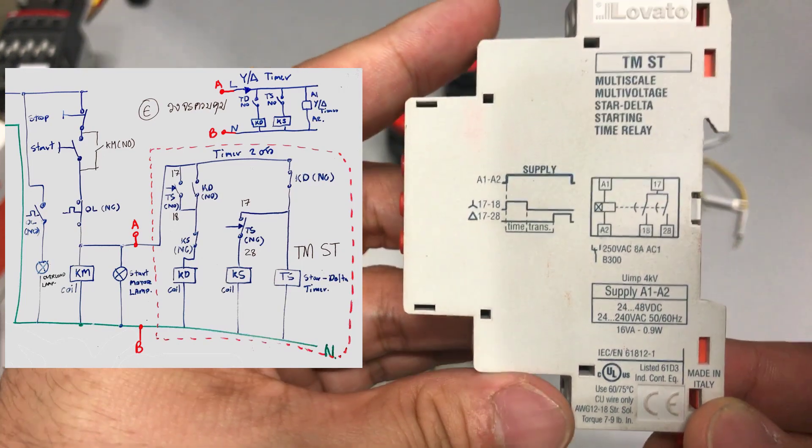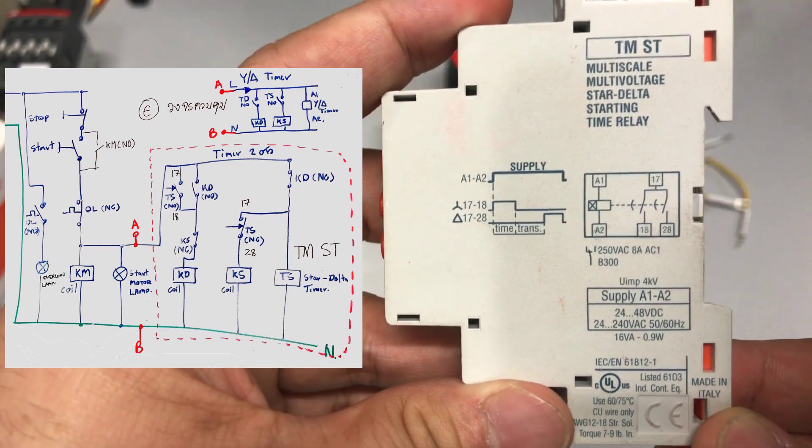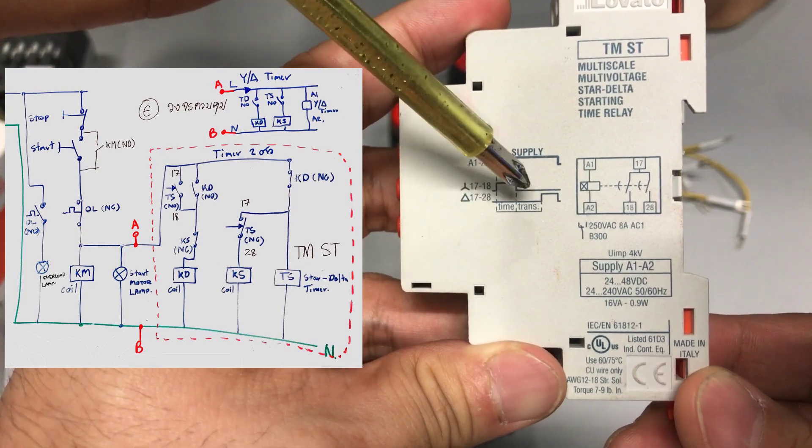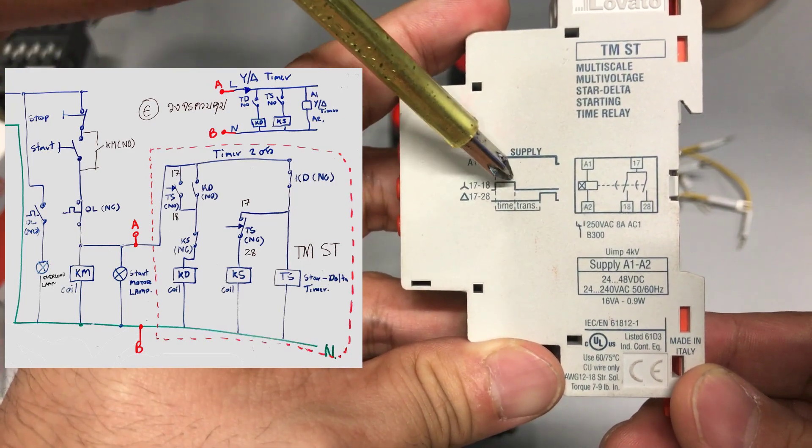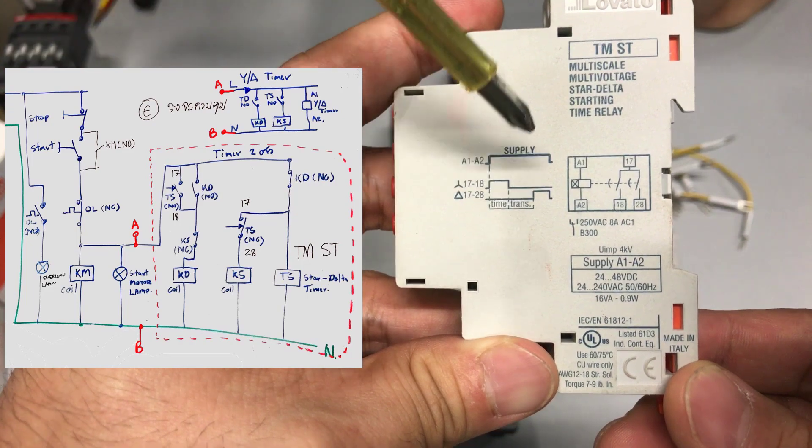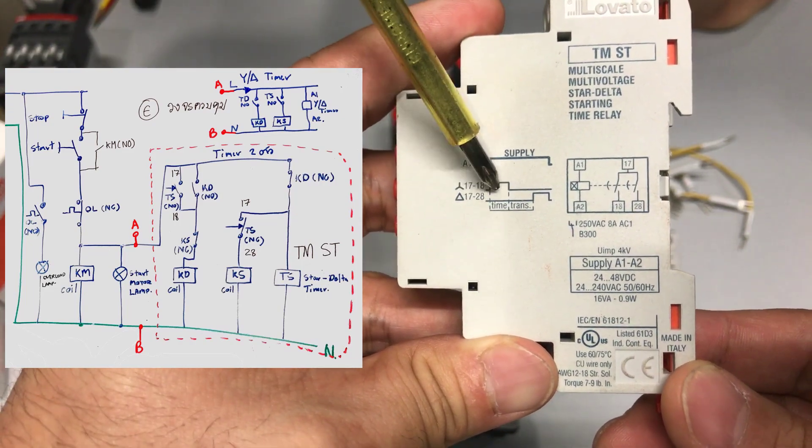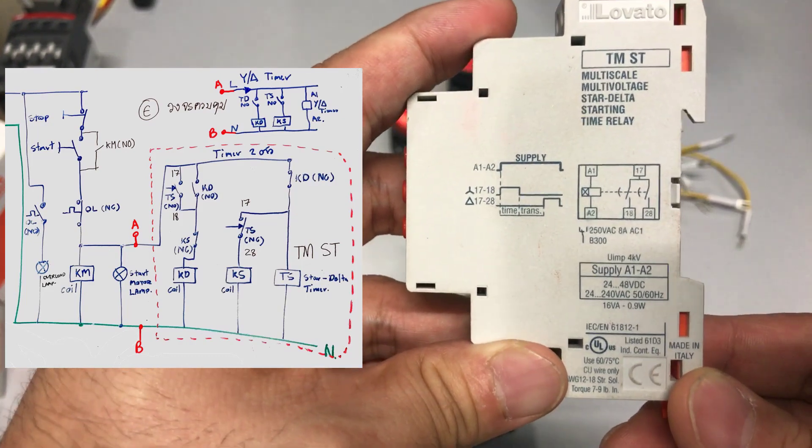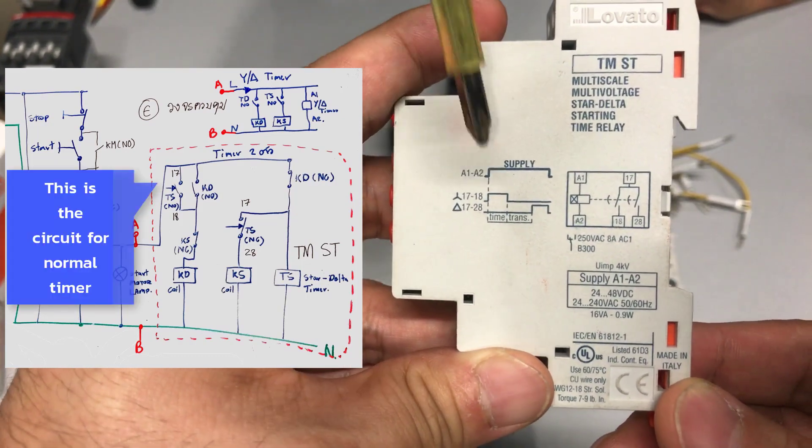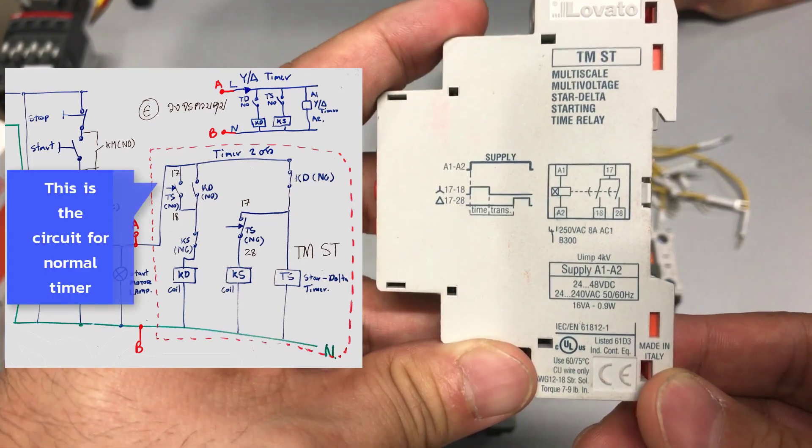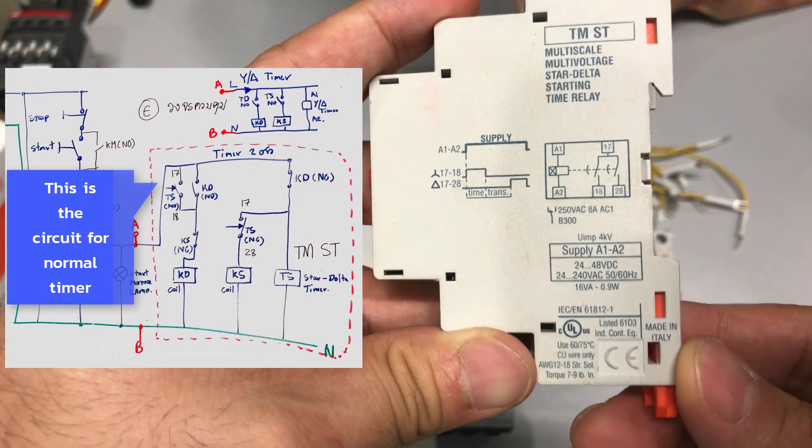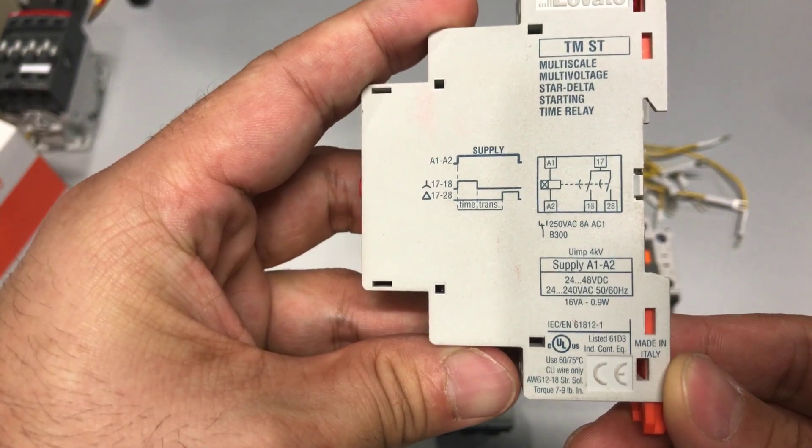Now, if you were to use a normal timer, there will be no transition delay. The timer will immediately switch the contactor from star to delta. This will work okay, but there's a chance that both star and delta contactors will be working at the same time, and this may cause some problems. In the diagram, we show both the circuit for the normal timer and the star delta timer.